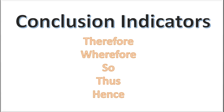Next are the conclusion indicators. When dissecting the argument, you look for both premise and conclusion — that's the first step. Conclusion indicator words include 'therefore,' 'wherefore,' 'thus,' and 'hence.' For instance: 'The garbage is piling up. You haven't taken it out in 24 hours. I've been watching you on video camera. Therefore, you do not take out the garbage enough.' Or: 'The garbage is piling up. Video cameras show you don't take out the garbage. So, you do not take out the garbage enough.' If you see one of these words, a conclusion is probably coming next.